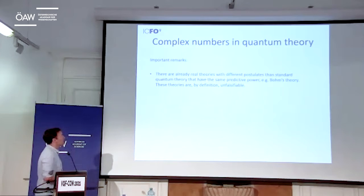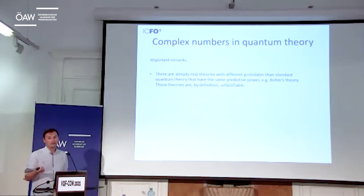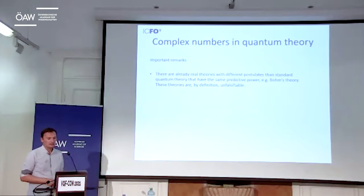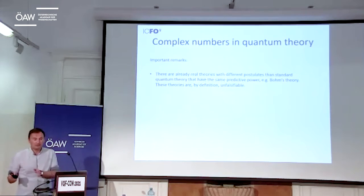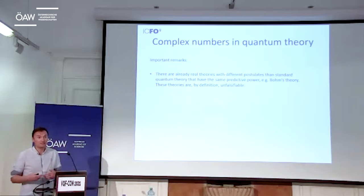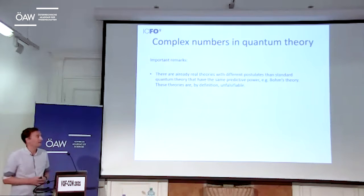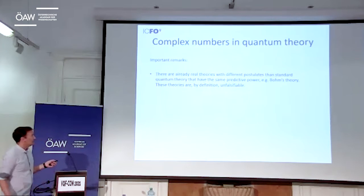There are some important remarks. There are theories or frameworks that use real numbers and give the same predictions as quantum physics — Bohm's theory, for instance. But this is not the question I'm interested in, because by definition, if you construct a theory to have the same predictive power as quantum theory, whether you prefer one or the other is just a matter of preference. The question becomes unfalsifiable. I'm not interested in theories that by construction have the same predictive power.